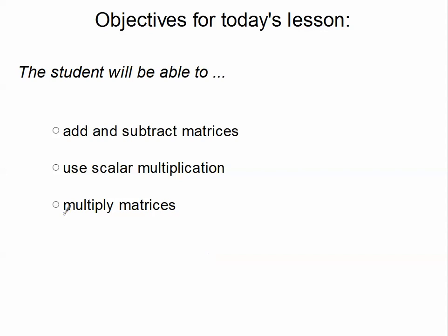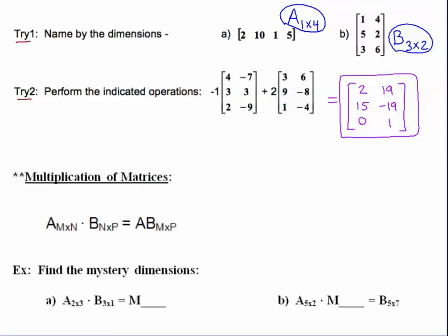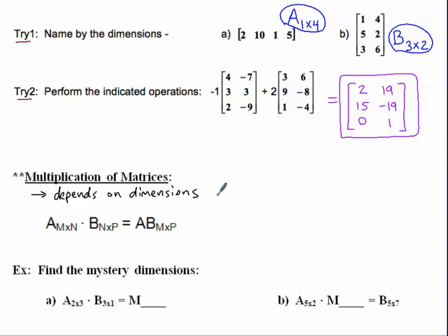In this second tutorial, we will be able to multiply matrices. Multiplication of matrices is a little bit more involved than simple addition and subtraction, because multiplication of matrices very much depends on the dimensions. You are not able to just multiply any two matrices together. There is a specific pattern of dimensions that must be followed, and it's all explained right here.